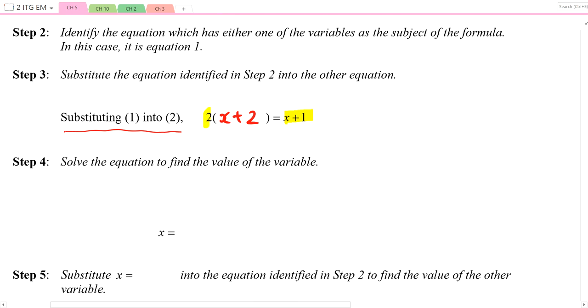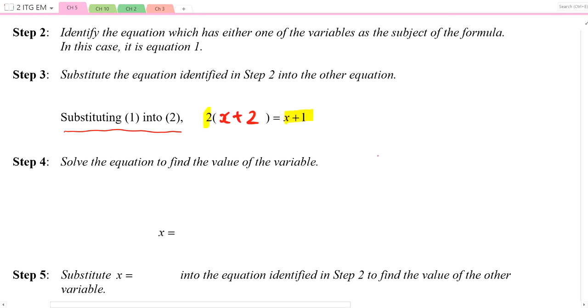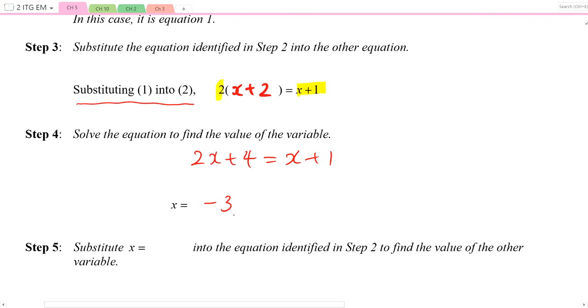This is the process of substitution, and now we solve it. To expand it out, we have 2x plus 4 equals x plus 1. This gives x equals negative 3. So I've got the answer for x, which is negative 3. And I need to find the corresponding value of y.